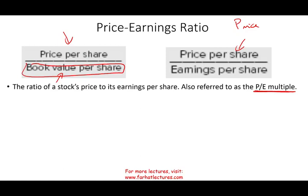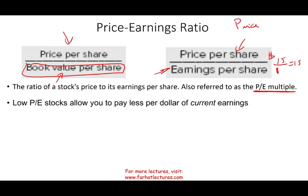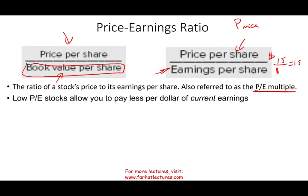If you want the value of the company from a book value perspective, you look at their book value and say, 'I'm going to pay five or seven times the book value.' Or if you want to buy based on future earnings, you look at the earnings multiple and say, 'I want to pay 10 times.' So if they're earning $1 per share and you want to pay 10 times, you'll pay $10 for the share. Low PE stocks allow you to pay less per dollar of current earnings — if you have a PE of eight, for every dollar in earnings you are paying $8 per share.